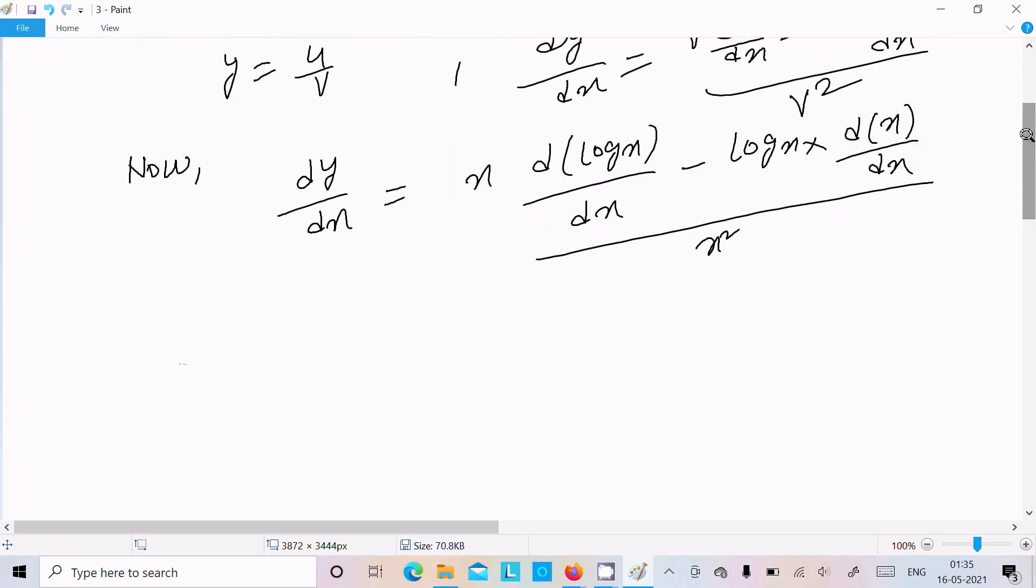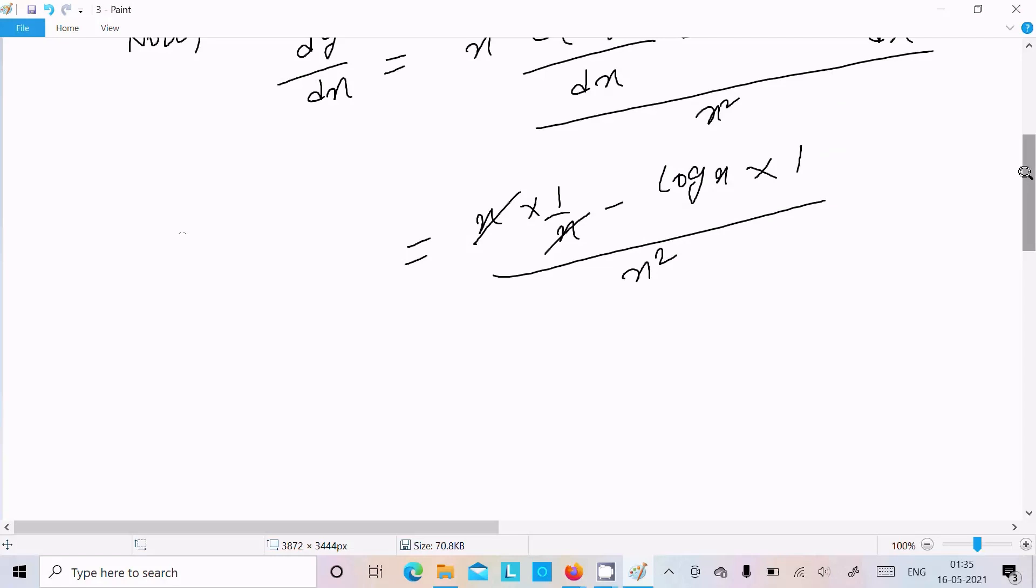Now thereafter, writing here x times log x differentiation, which is 1 by x, minus log x times dx differentiation, which is 1. This x cancels. Now we have 1 minus log x divided by x squared.